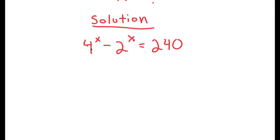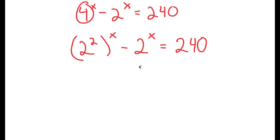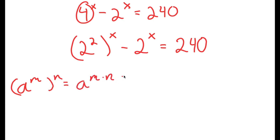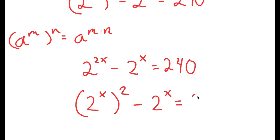From here, I'm going to rewrite 4 as 2 squared. So I get 2 squared to the power of x minus 2 to the power of x is equal to 240. Using the property a to the power of m to the power of n equals a to the power of m times n, I get 2 to the power of 2x minus 2 to the power of x equals 240. I can rewrite 2 to the power of 2x as 2 to the power of x, squared.